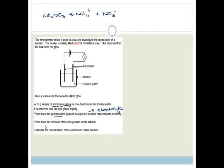Now it says write down the formula for the ions present in the solution. I've already done that. It's NH4 plus and NO3 minus. Finally it says calculate the concentration of the ammonium nitrate solution. That's really easy.